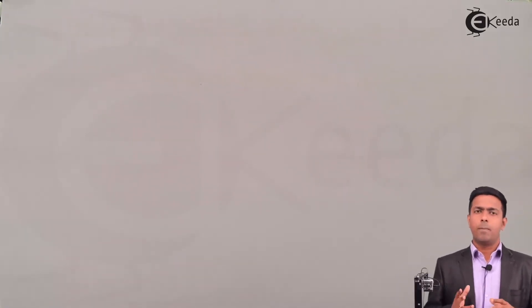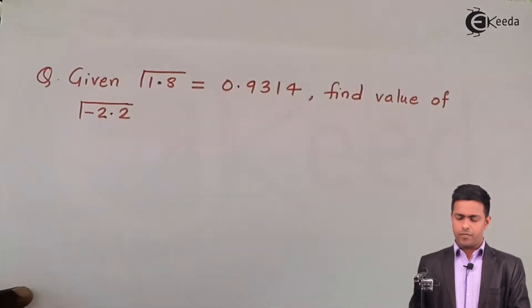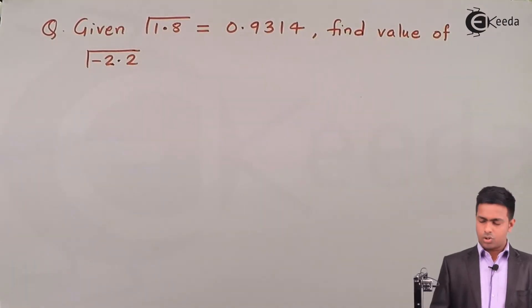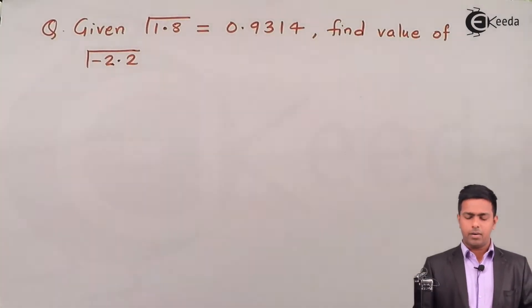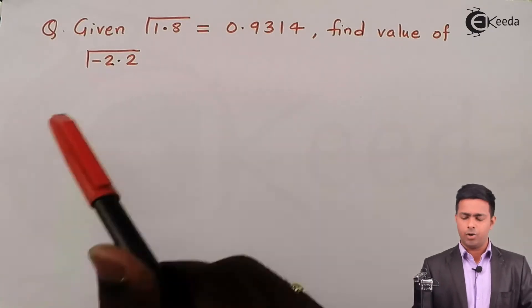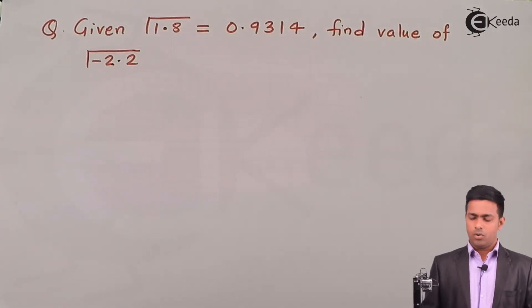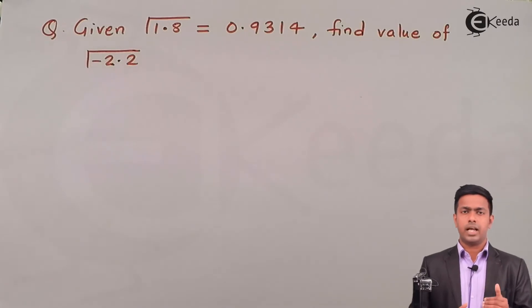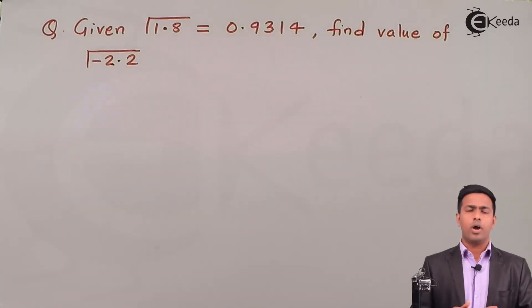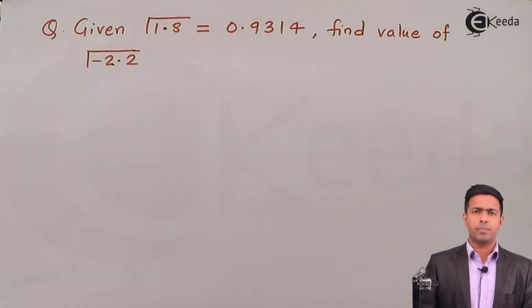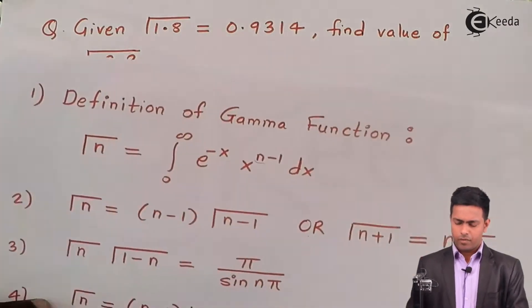Hello friends, here we are going to learn a problem based on the gamma function and we will be solving this numerical by using the properties of gamma function. We have to find out the value of gamma(-2.2), and for that the value of gamma(1.8) is given as 0.9314. The question is how to get the value of gamma(-2.2) from gamma(1.8), and for this we will be using the properties.